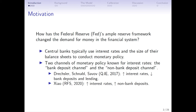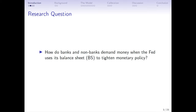In the bank deposit channel — from the well-known Drechsler, Schnabel, and Savov QJE 2017 paper — when the Federal Reserve raises interest rates, that leads to a decline in bank deposits and lending. Then Kairong Xiao in RFS 2020 asked where that money goes, and showed that when the Fed raises interest rates, it leads to an increase in non-bank deposits — the non-bank deposit channel. When I talk about non-banks, I'm specifically referring to money market mutual funds. In this paper, we ask: so we know these two channels of monetary policy transmission for interest rates — what about when the Federal Reserve uses its balance sheet, specifically quantitative tightening, when the Fed is reducing the size of its balance sheet as it's doing now?